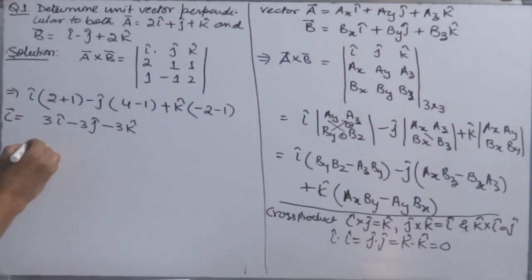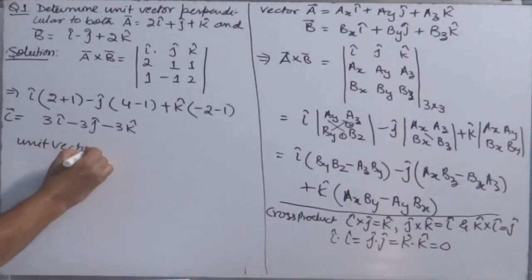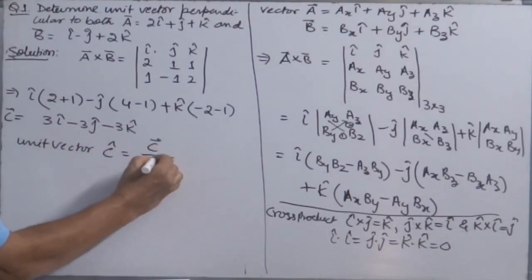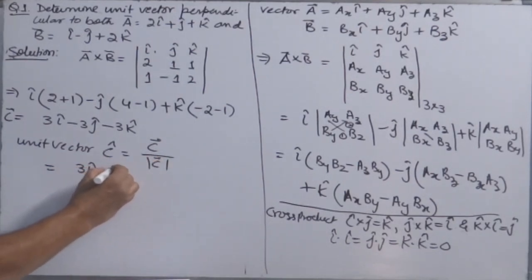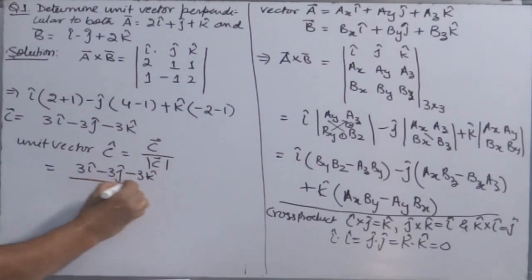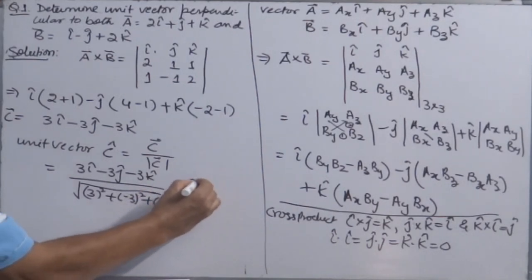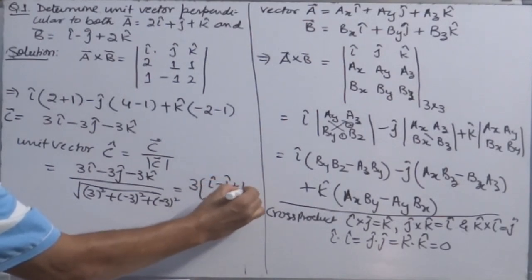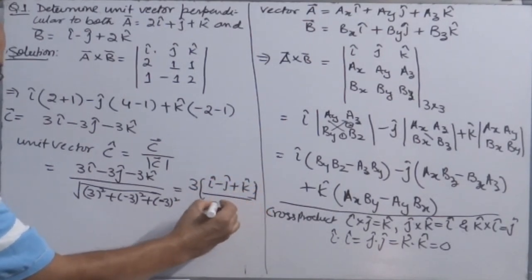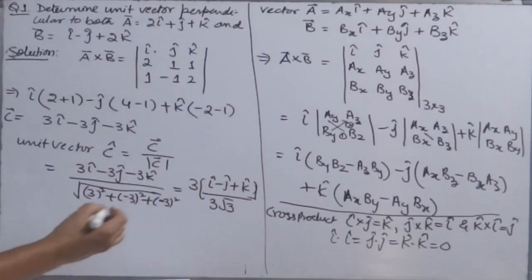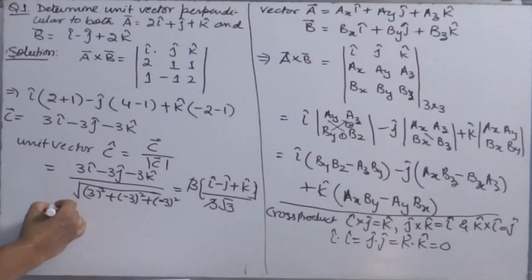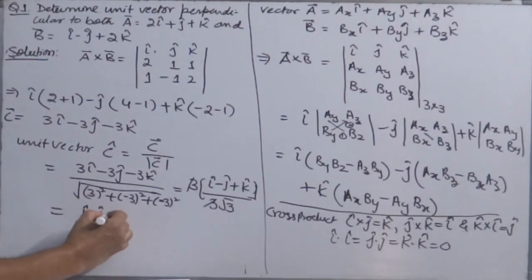This resultant vector C = 3i-cap minus 3j-cap minus 3k-cap is perpendicular to both vectors A and B. Now find the unit vector of vector C: c-cap equals vector C divided by the magnitude of C, which is (3i-cap minus 3j-cap minus 3k-cap) divided by the square root of (3² + 3² + 3²) = 3√3. The threes cancel, giving the answer: (i-cap minus j-cap minus k-cap) divided by √3.